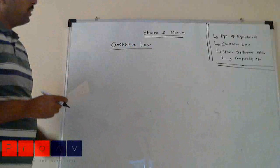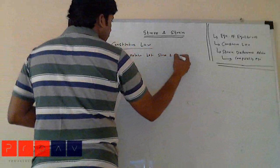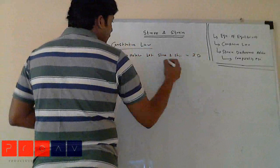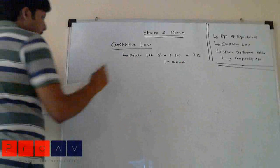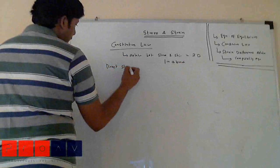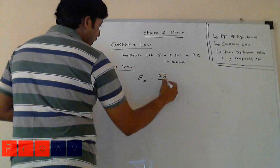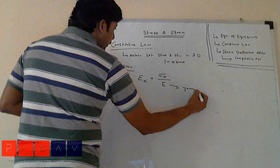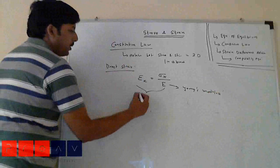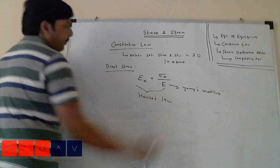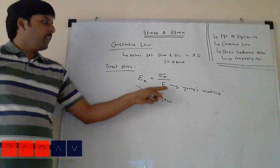The constitutive law is the relation between stress and strain in a three-dimensional linear elastic element. The direct strain is given by: epsilon x equals sigma x by E, where E is Young's modulus. This is famously known as Hooke's law. This directly gives the relation between stress and strain.